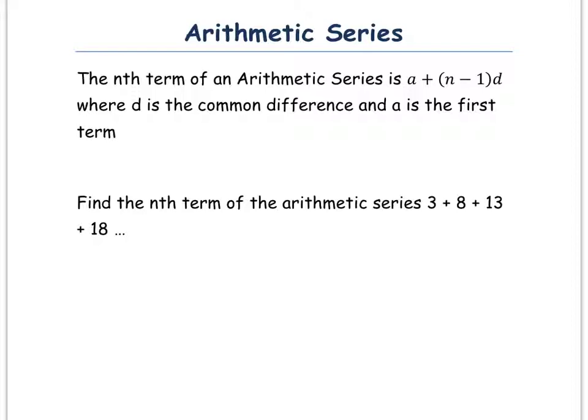Then, if you've found these, you can use this rule: A plus N minus 1 in brackets times D, to find the nth term rule. Now you need to learn this equation, as it might not be given to you in the formula book. So ensure that you learn this. Remember, A is the first term in the sequence, and D is the common difference in the sequence.